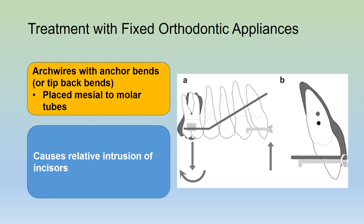The arch wire can also incorporate tip-back bends, also known as tip-back bands, which are placed just mesial to the molar tubes. This also causes relative intrusion of the incisors.